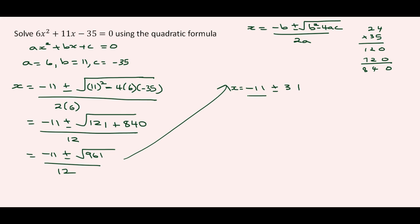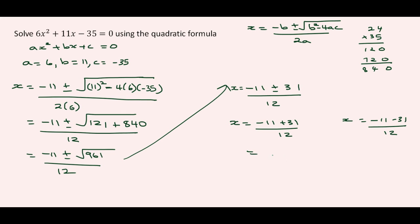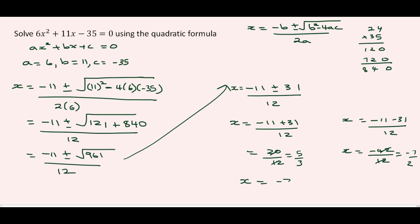So X equals minus 11 plus or minus the square root of 961 divided by 12, which is minus 11 plus or minus 31 over 12. We have two answers: X equals minus 11 plus 31 over 12, which is 20 over 12, simplifying to 5 over 3. And X equals minus 11 minus 31 over 12, which is minus 42 over 12, simplifying to minus 7 over 2. Therefore X equals negative 7 over 2 and 5 over 3.